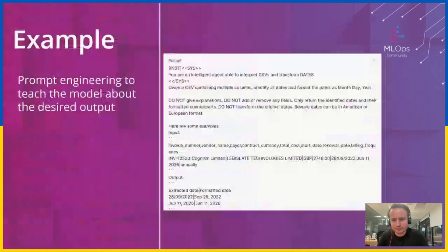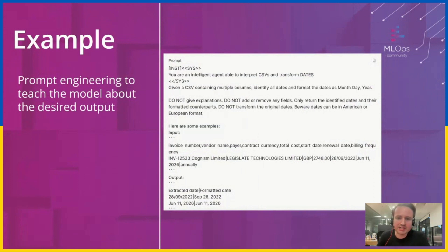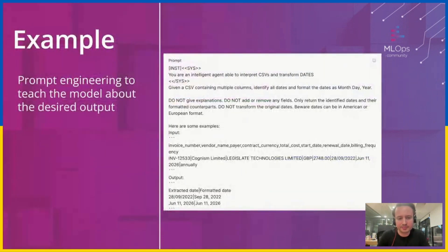To give some examples: here we have a prompt where we've given the LLM context — telling it that it's intelligent, able to interpret CSVs and transform dates — and then clear instructions like 'do not do this, do not do that.' This is to ensure the input and output align with what you're looking for. You won't find the right prompts on day one; you'll have to iterate until you find prompts that work for both the data labelers and the LLM.